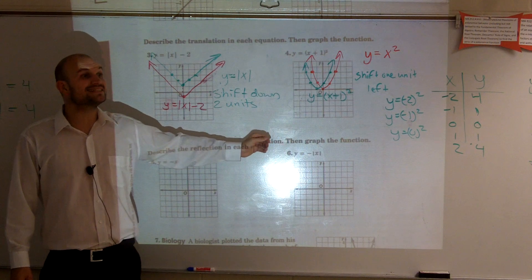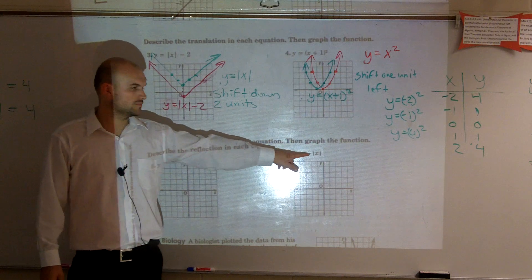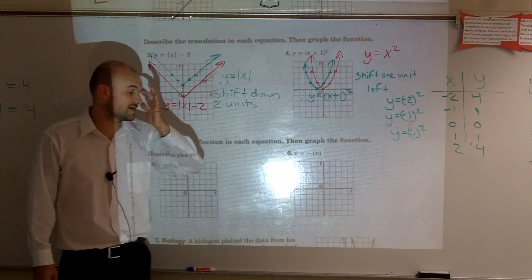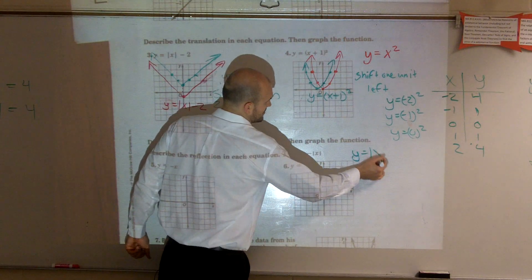Oh, what is the parent graph? What are these little lines? It's absolute value of x, right? So our parent graph is y equals absolute value of x.